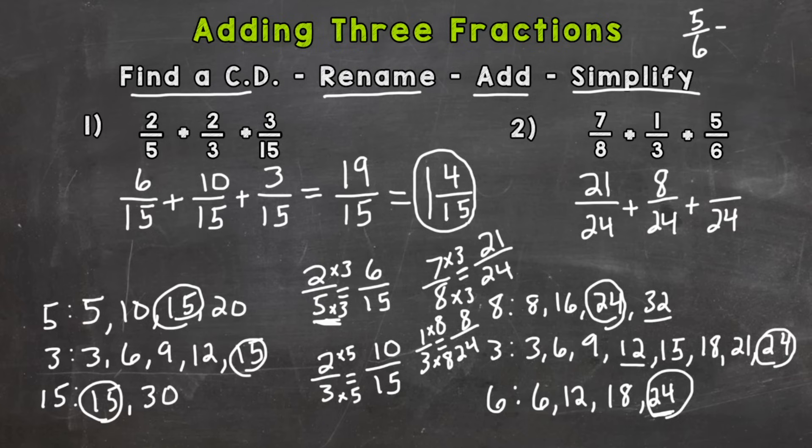So 1 3rd is equivalent to 8 24ths. And lastly I'll do 5 6th up at the top. 5 out of 6 equals how many 24ths? Well 6 times 4 is 24. 5 times 4 is 20. So now everything is renamed with a common denominator. So we are able to add 21 plus 8 is 29 plus 20 is 49 and we keep our denominator of 24 the same.